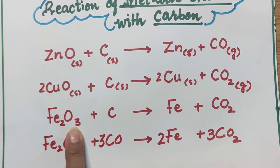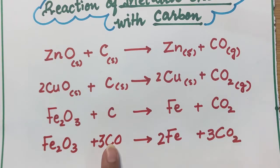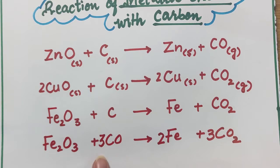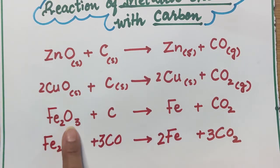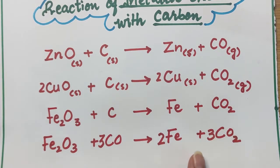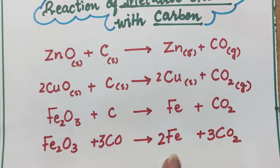Iron oxide at very high temperatures reacts with carbon. Carbon takes oxygen to form carbon dioxide, or carbon in the presence of oxygen forms carbon monoxide. This carbon monoxide then acts as a reducing agent, reacting with the oxygen in iron oxide to form carbon dioxide, and the iron metal is extracted.